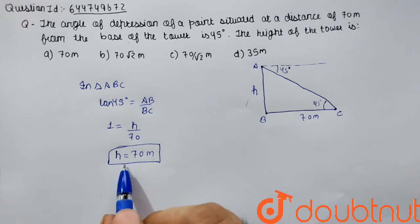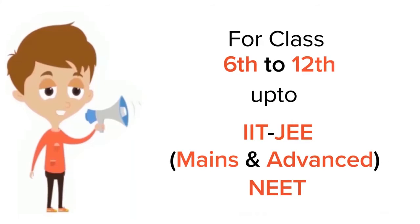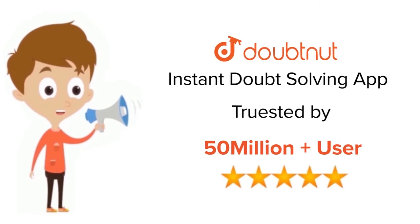AB is 70 meters, so option A is correct. For class 6 to 12, IIT-JEE, and NEET level, trusted by more than 5 crore students. Download Doubtnut app today.